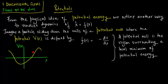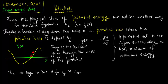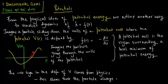We highlight the particle and the direction in which it is moving. You imagine the particle actually moving through the walls of the potential. The negative sign in the definition of V actually comes from physics.